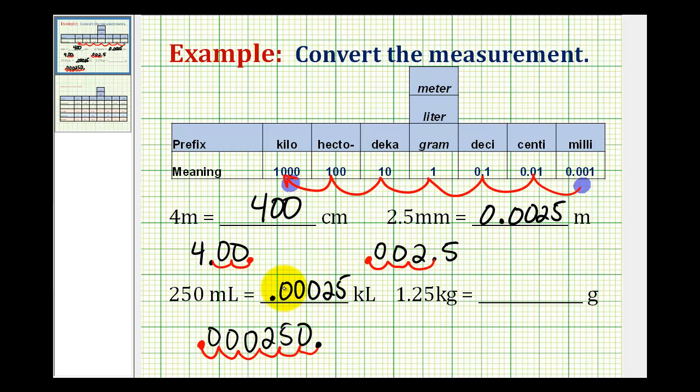Remember, any extra zeros to the right of this last digit would not change the value of the decimal. And again, we may want to put a zero here in the ones place value.